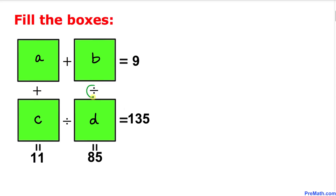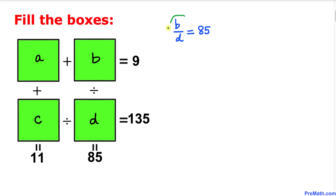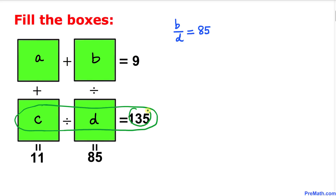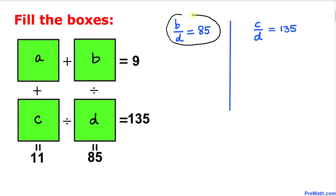We are going to deal with the division operations first. Let's focus on the vertical boxes: b divided by d equals 85. And for the horizontal boxes: c divided by d equals 135.